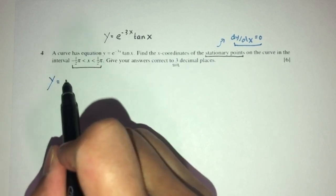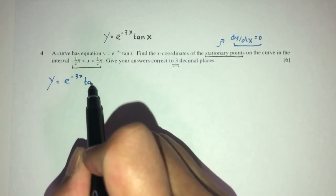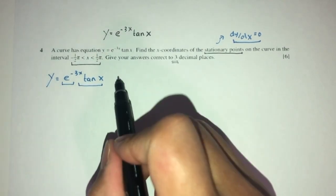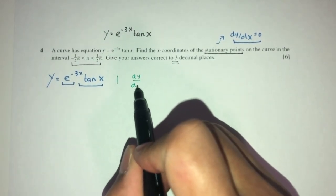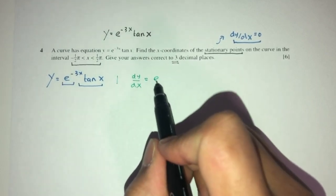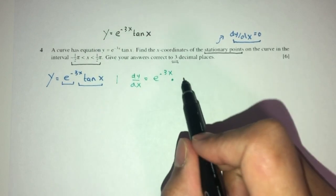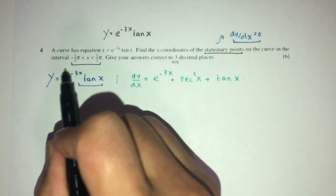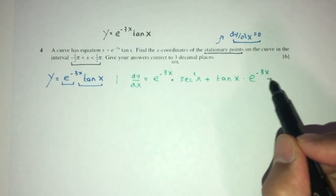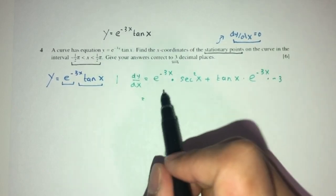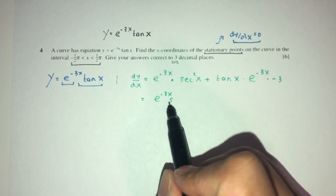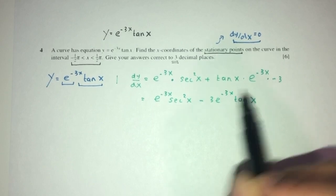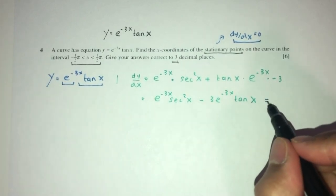y has been given by this equation. This is a product — e to the minus 3x times tan x. So we have to find dy/dx using the product rule. dy/dx will be: first, write the first one as it is, times d/dx of the second, plus the second one as it is, times d/dx of the first, which is e to the minus 3x times minus 3. Simplify: you will have e to the minus 3x times sec squared x, minus 3 times e to the minus 3x times tan x.